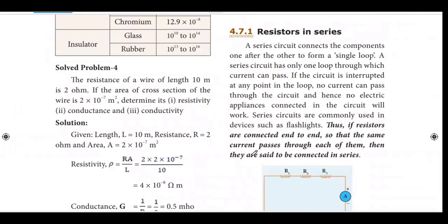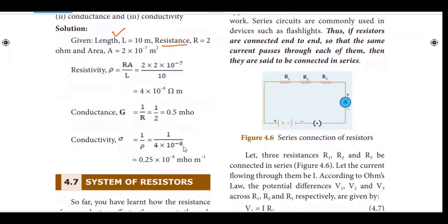The resistance of a wire of length 10 meter is 2 ohm. If the area of cross-section of the wire is 2 into 10 to the minus 7 meter square, determine the resistivity, conductance and conductivity. Now the values: the length L is equal to 10 meter, the resistance of a wire is equal to 2 ohm, area is 2 into 10 to the minus 7 meter square.